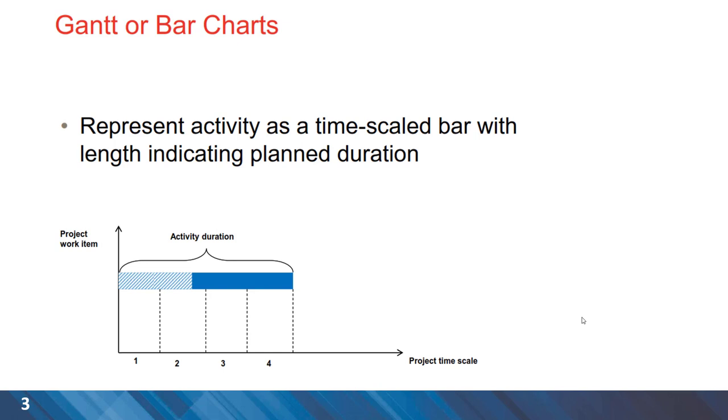Usually we have activities listed on the vertical axis and the time scale for the project that can be days, weeks, months, or even years are illustrated on the horizontal axis. The solid bar for each activity shows the duration for that.